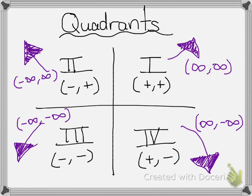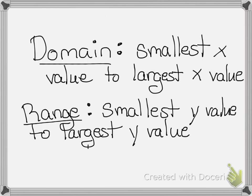In the second quadrant, if you have an arrow in the second quadrant, you will label that arrow negative infinity comma positive infinity, and so on. Also remember: to find your domain it will be the smallest x value to your largest x value. Your range will be your smallest y value to your largest y value.